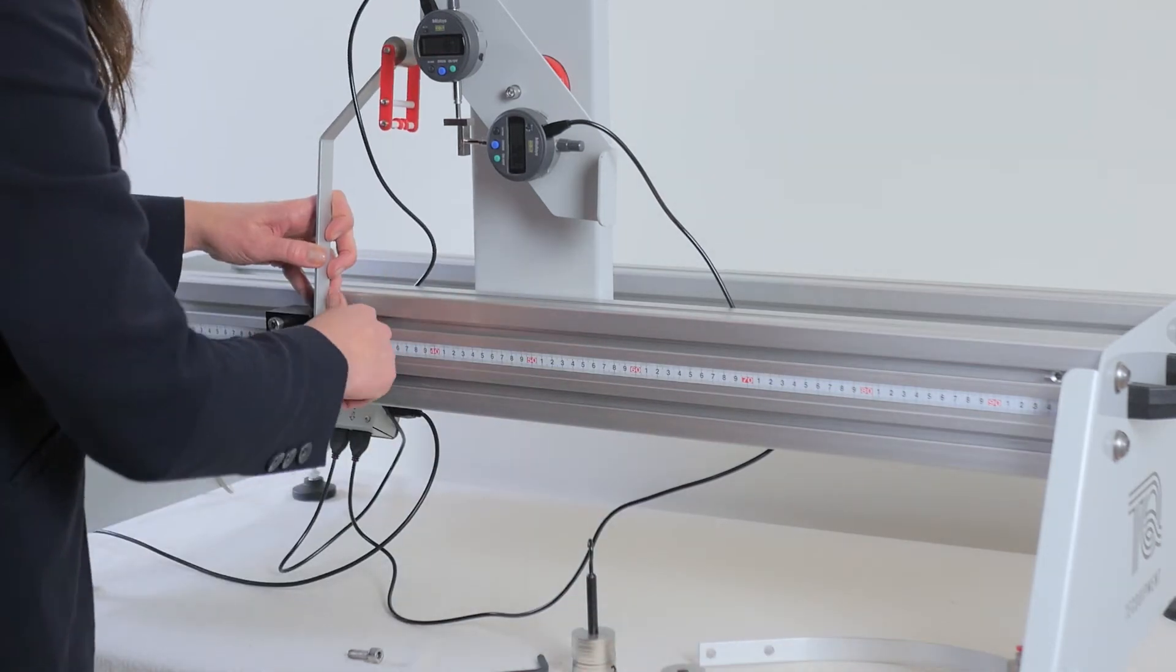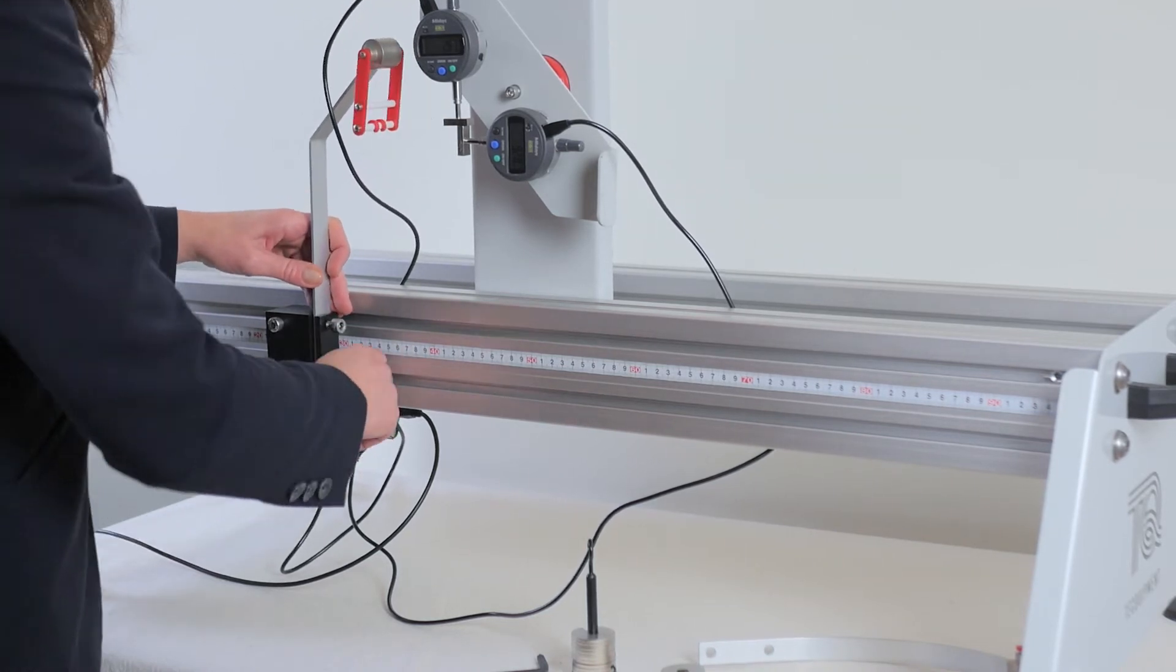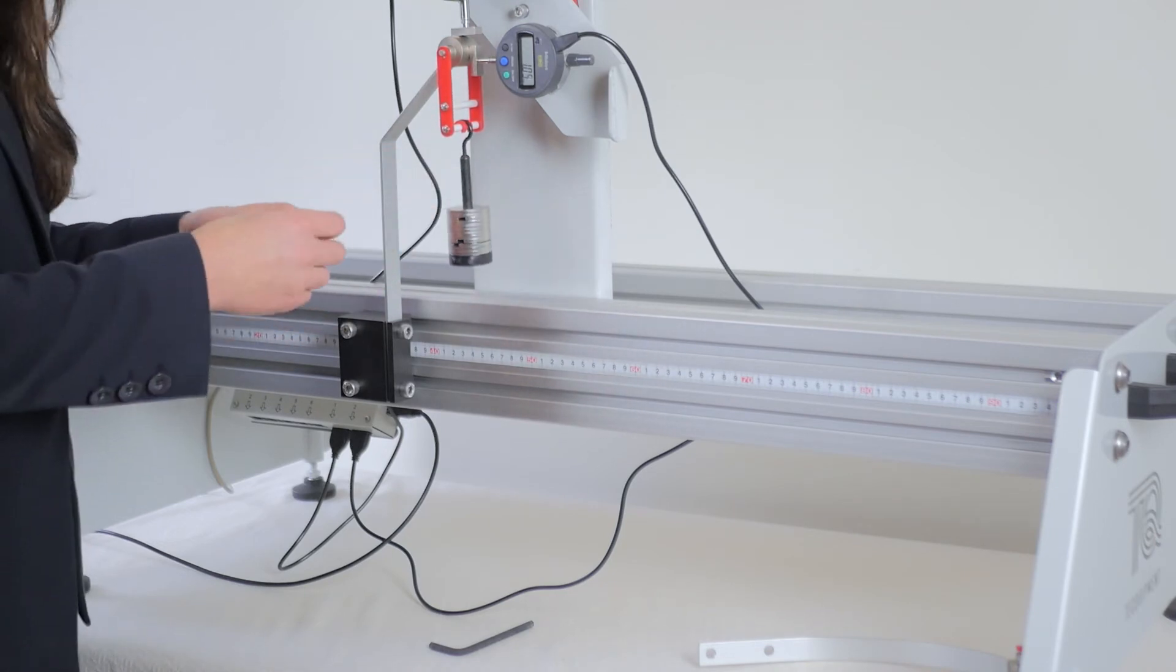Then it's time to test the davit by fixing it in place like this and applying loads in 100 gram increments, each time measuring the vertical deflection and horizontal deflection.